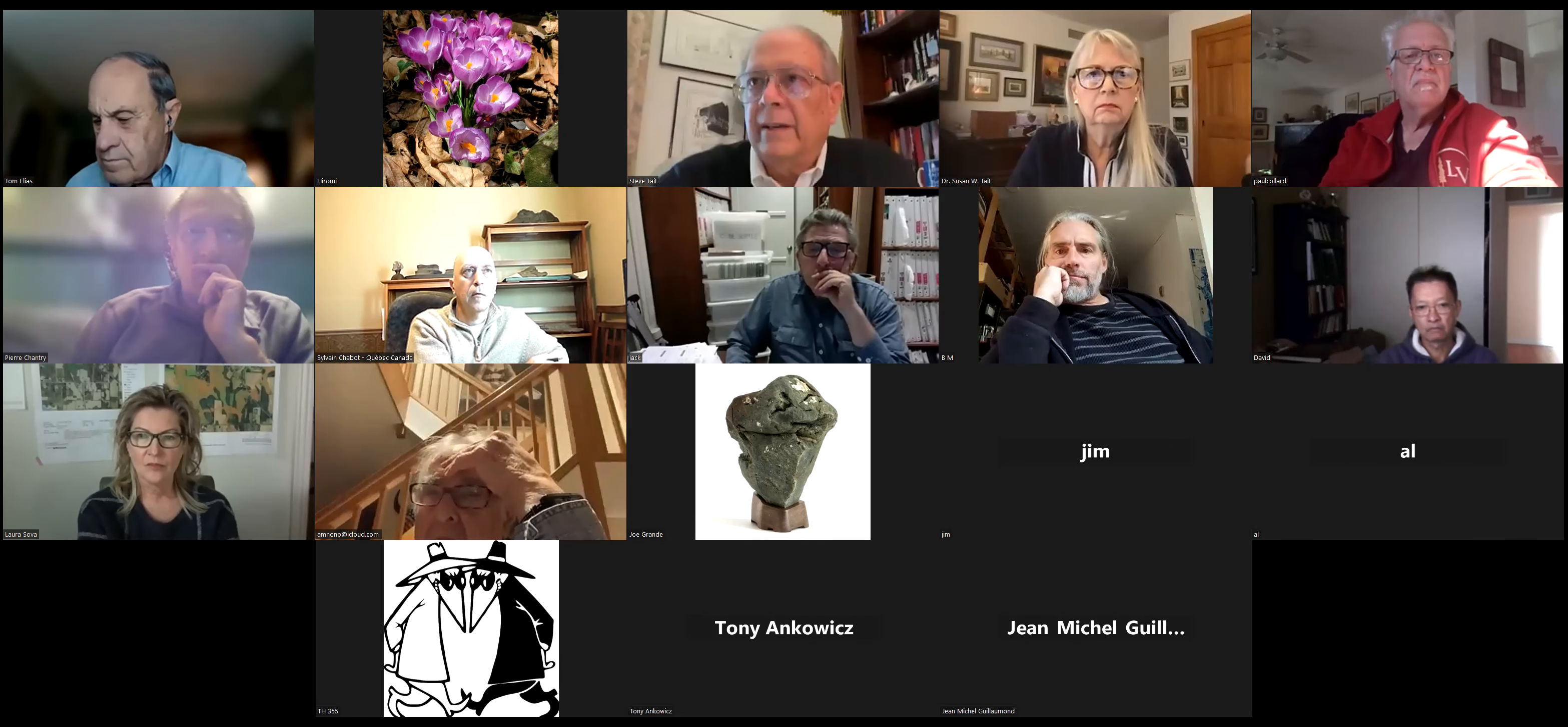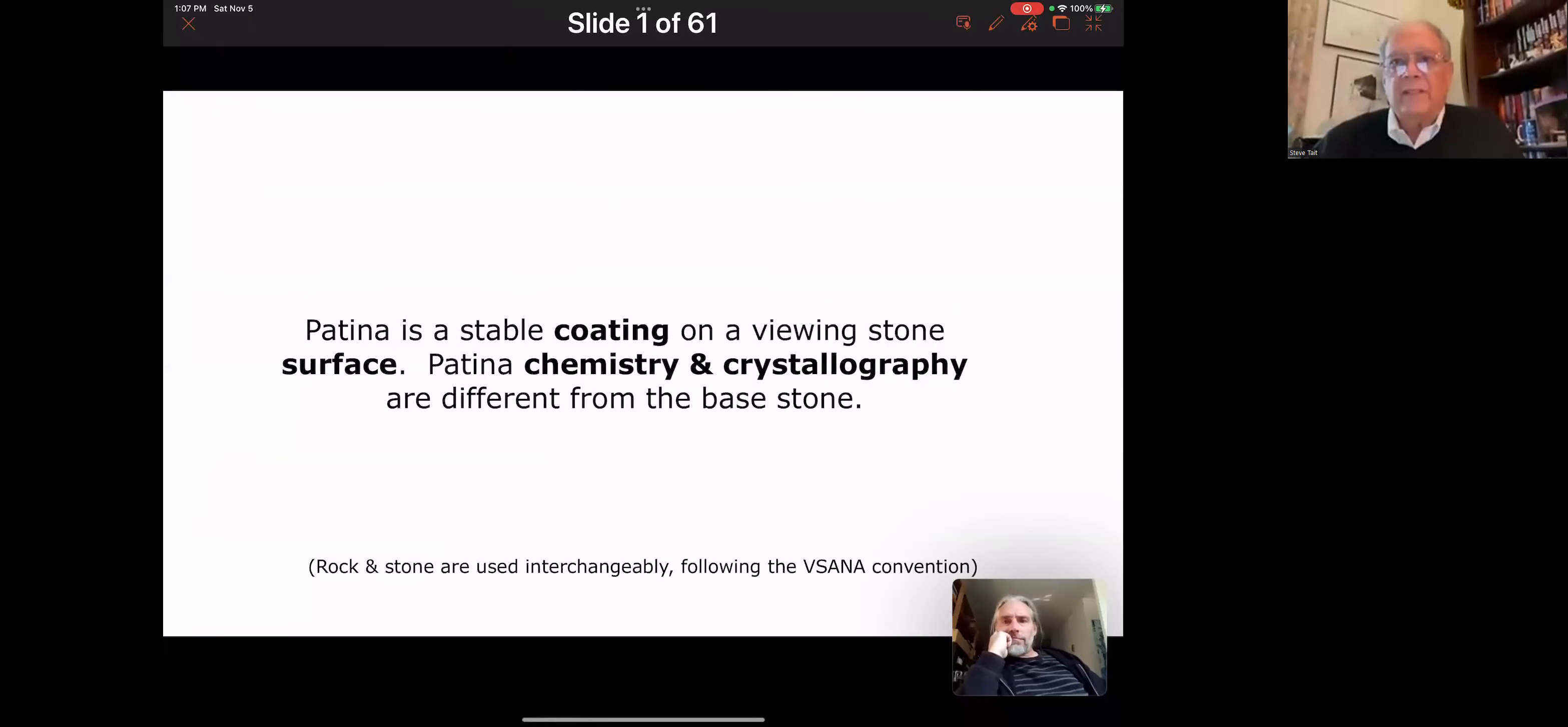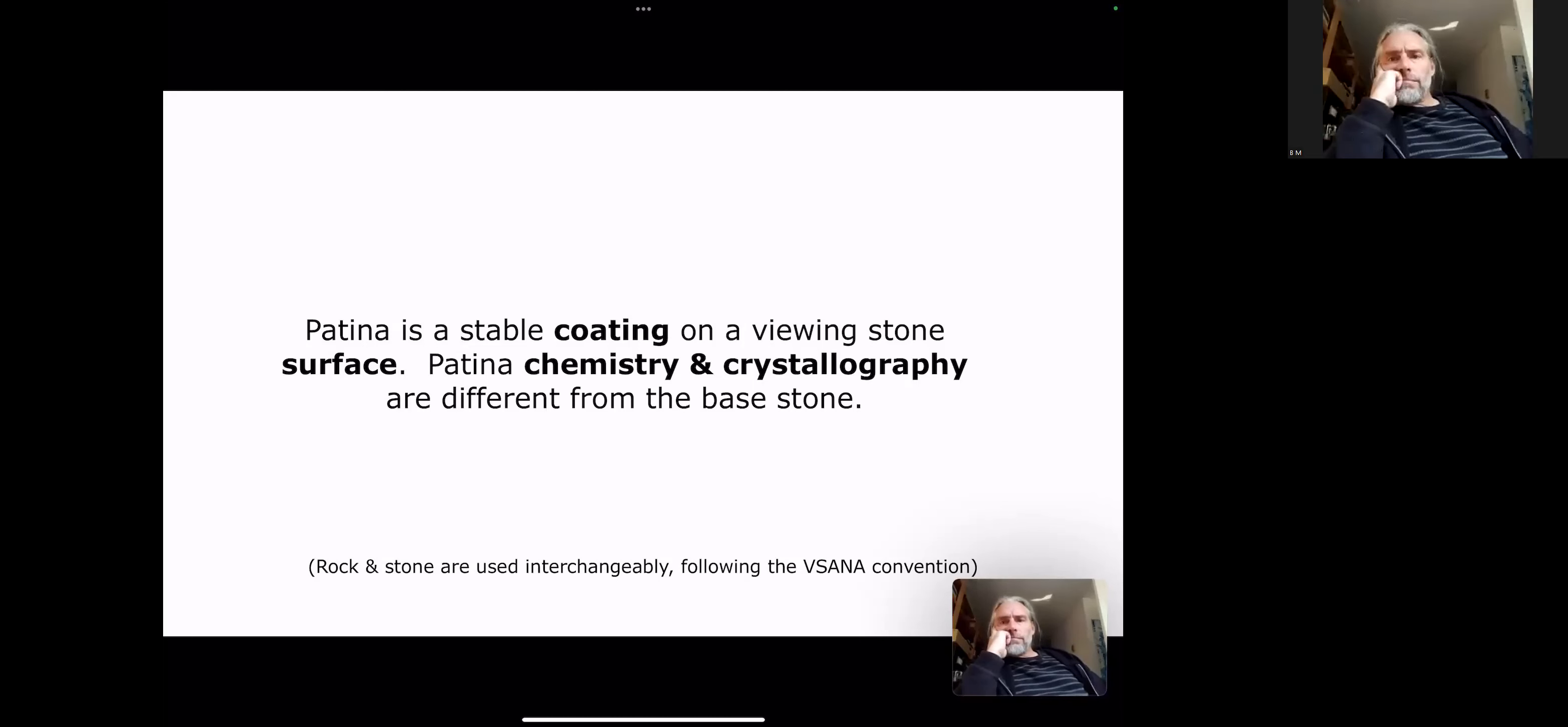Thank you, Tom, and hello to everybody. From Sue and myself, we've got to let Zoom go through its stages here. We're going to start off with just a review on the definition of patina. This was developed with input from Vassana members and integrated with science. Patina is a stable coating on your viewing stone surface, and its chemistry and crystallography are different from the base stone. I'm going to follow the Vassana convention of switching back and forth between rock and stone.